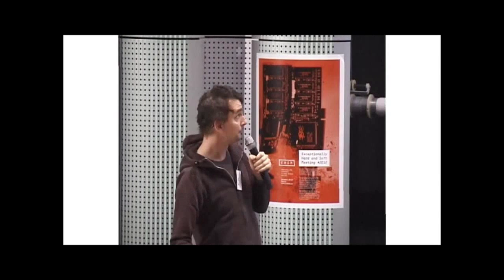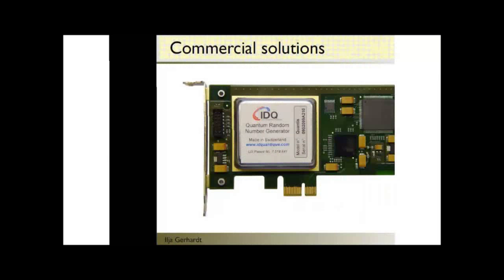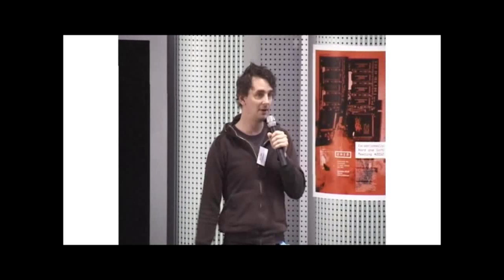You can even buy such a device. This is from ID Quantique in Geneva — the quantum random number generator. It's basically a LED, a beam splitter, and two detectors. The numbers are run through a hash function, which I'll discuss shortly. This device costs about 1,000 euros and gives you around 4 megabits of random digits per second via a PCI Express card.